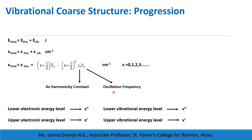As a convention, the lower electronic energy level is marked as ε″ (double dash) and the upper electronic energy level as ε′ (single dash). In each electronic energy level there will be a number of vibrational energy levels. The vibrational energy levels in the lower electronic energy level are marked as v″, and those in the upper electronic energy level as v′.